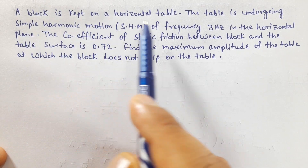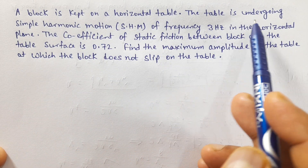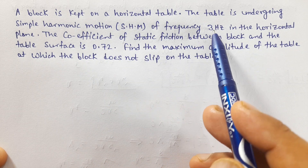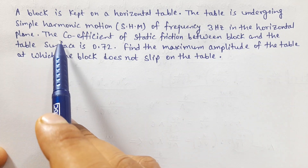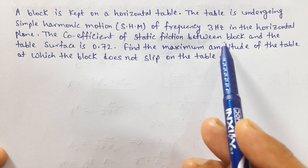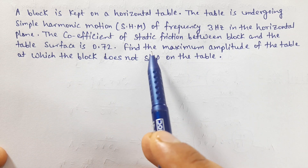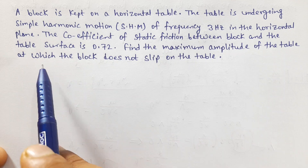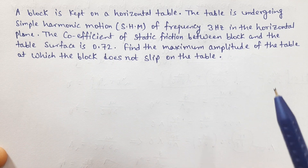A block is kept on a horizontal table. The table is undergoing simple harmonic motion of frequency 3 Hz in the horizontal plane. The coefficient of static friction between the block and the table is 0.72. Find the maximum amplitude of the table at which the block does not slip on the table.